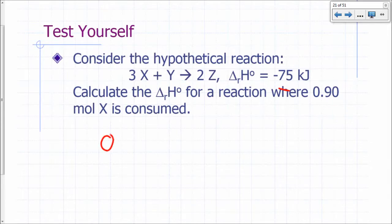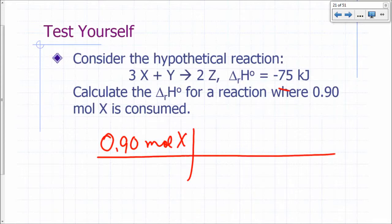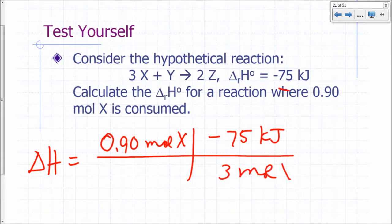So you can say, if only 0.9 moles of X are consumed, I can just do a conversion here. I can say, well, it's going to involve, so our delta H for this would be negative 75 kilojoules for three moles of X times 0.9 moles of X. So that's all you have to do.